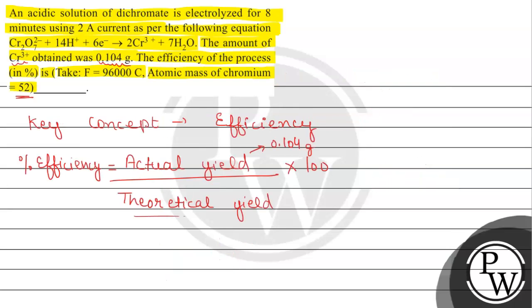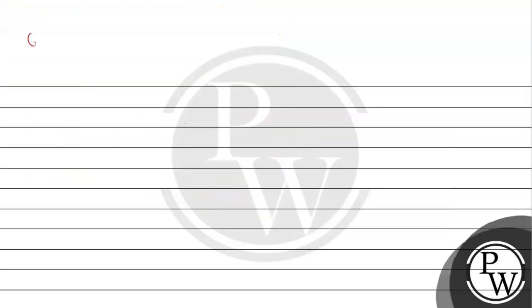Now let's see the reaction given: Cr₂O₇²⁻ + 14H⁺ + 6e⁻ → 2Cr³⁺ + 7H₂O. Now we need to find number of moles of chromium deposited. First we will see the change in oxidation state.